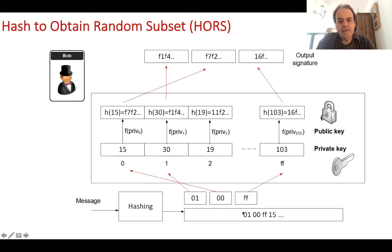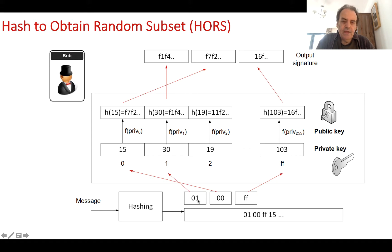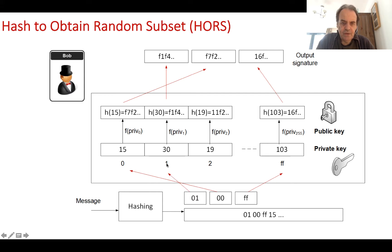Here is the hashed value we get. We organize it into 8-bit chunks, take the integer value, and look it up in our table. The first chunk is 01, so we go to that value — it's 30. We then go to the public key, which is the hashed version of 30, and that becomes the first part of our signature.